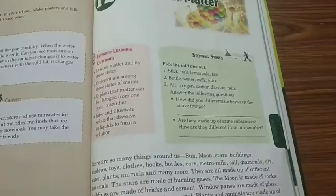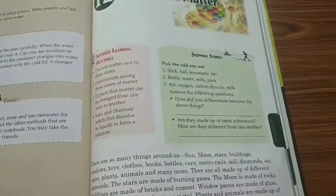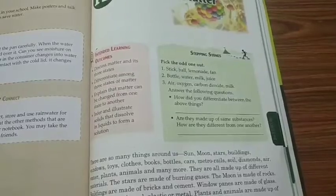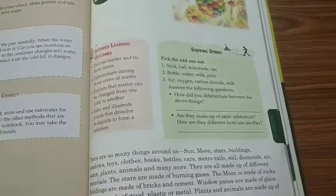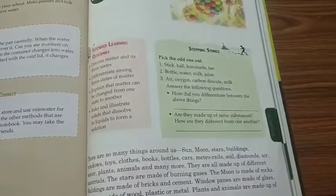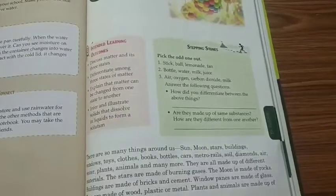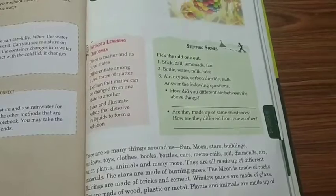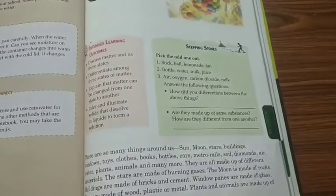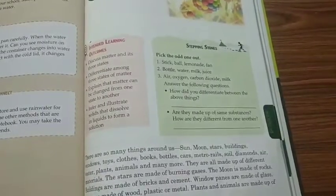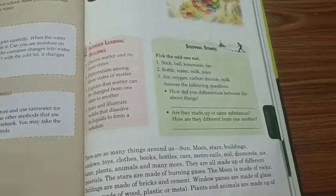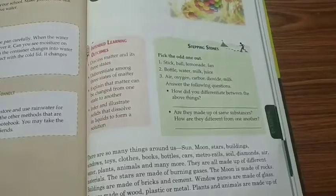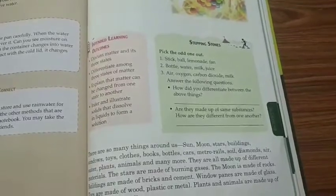They are all made of different materials. The stars are made of burning gases, the moon is made of rocks, buildings are made of bricks and cement, window panes are made of glass, toys are made of wood, plastic.